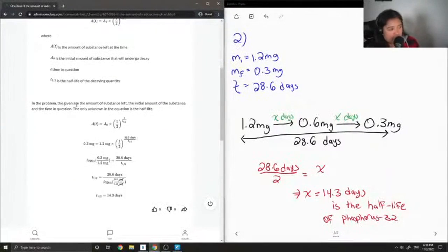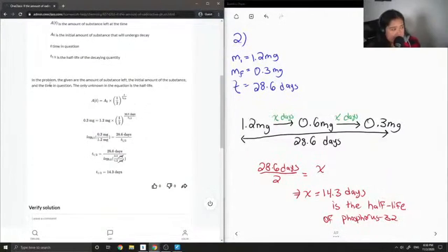So in the problem, the given are the amount of substance left, the initial amount of the substance, and the time in question. The only unknown in the equation is the half-life.